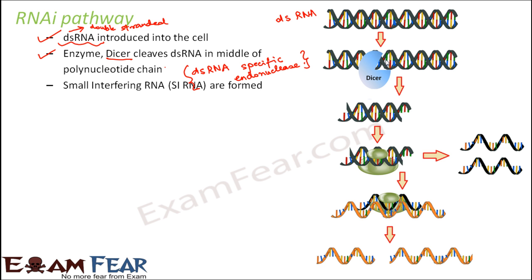When the Dicer cuts the dsRNA, the result is the formation of small interfering RNAs, or siRNAs. These are small RNA pieces which contain around 20 to 25 nucleotides, so their length is extremely small. If you observe, they have hanging ends on both the three-prime ends with unpaired bases on each three-prime end.